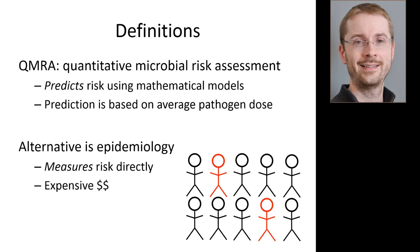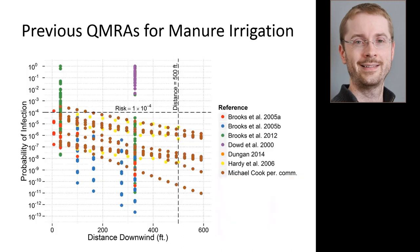Nobody's ever done epi for manure irrigation because the practice is so new and epi is so expensive. People have used QMRA — microbial risk assessment — for manure irrigation. This is just an illustration of previous results. On the y-axis is probability of infection, and on the x-axis is distance downwind in feet. As a reference point, risk equals 1 times 10 to the minus 4, which is one case of illness per 10,000 people exposed, and a reference distance of 500 feet.